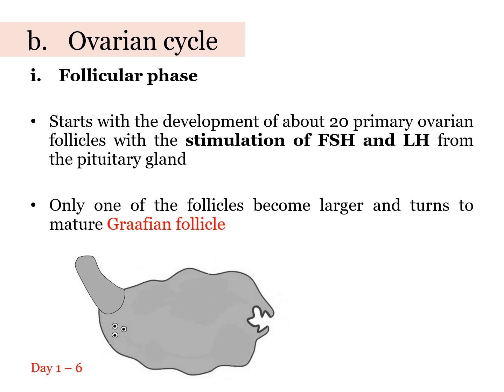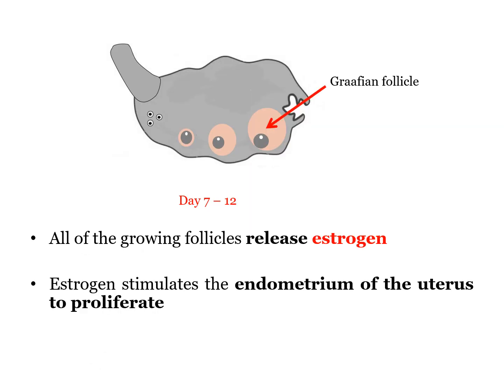The second cycle is the ovarian cycle. Let's focus on the ovary. The first phase in this cycle is the follicular phase. As a female reaches puberty, FSH and LH are triggered to be secreted. These two hormones stimulate the growth of the primary follicles in the ovary. This happens on day 1 to 6. On day 7 to 12, the growing follicles secrete the hormone estrogen. One of the roles of estrogen is to stimulate the repair of the uterine lining. Remember, previously in day 1 to 6, the uterine lining was shed through the process of menstruation.